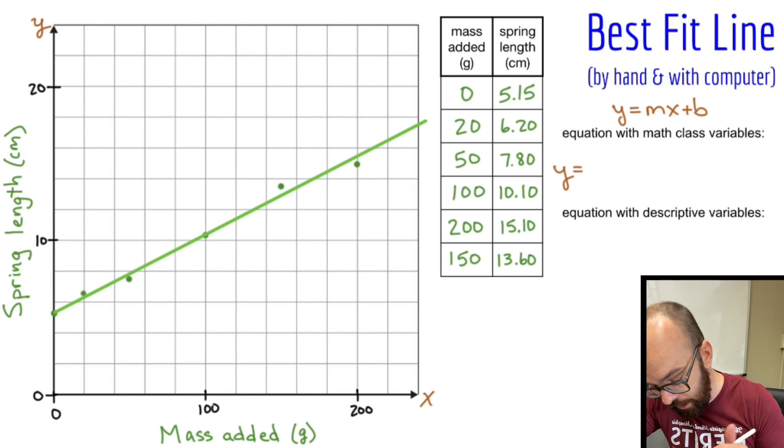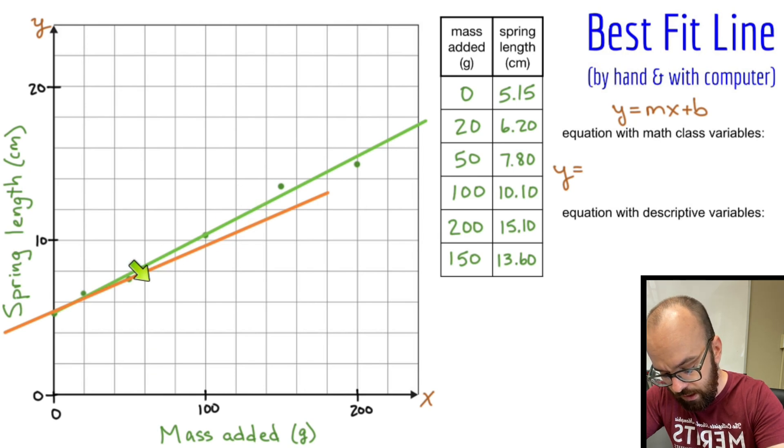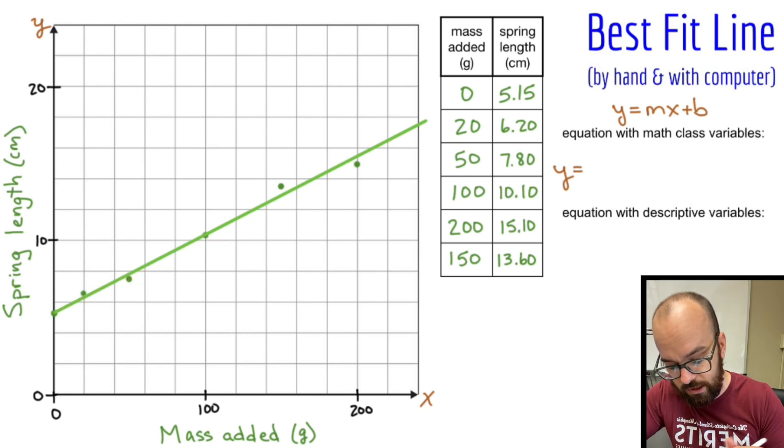Because here's what can happen. Let's say you choose two data points. Let's say you chose this point and that point. And you say, I'm going to draw my line of best fit from those two. Those two are both pretty close to the line. But the problem becomes we're not getting the equation for our line of best fit. You're getting the equation for this line that I just drew in orange, because that's what goes through those two data points. But that's not what we're trying to find the equation for. So don't choose data points.